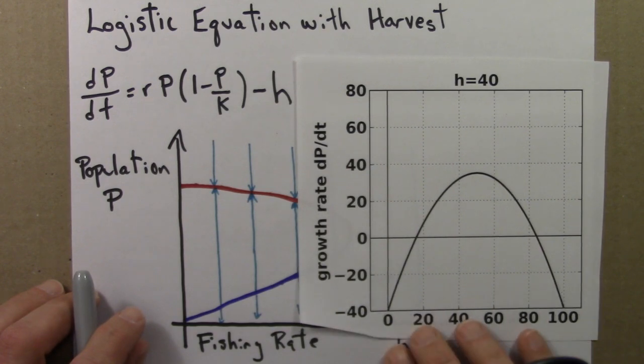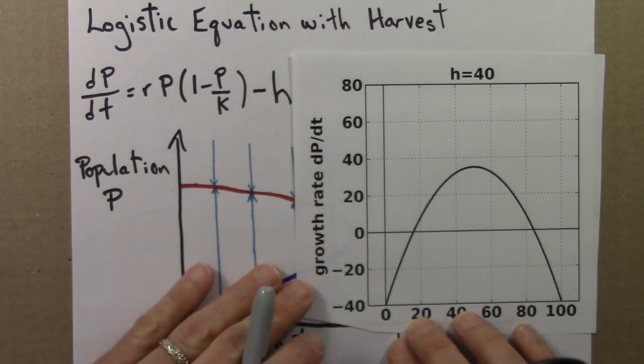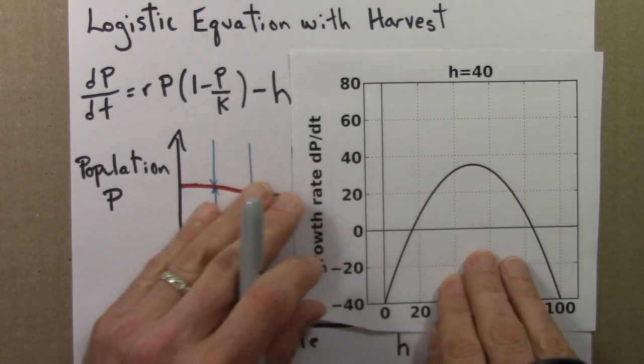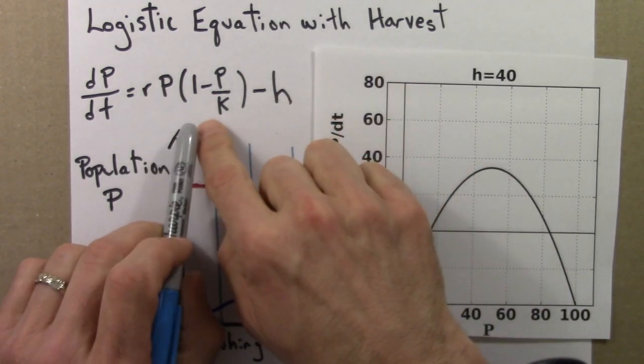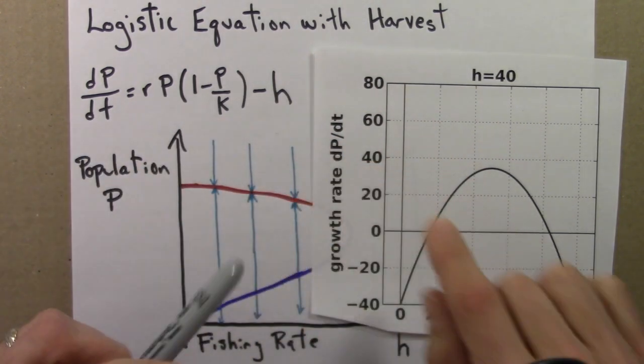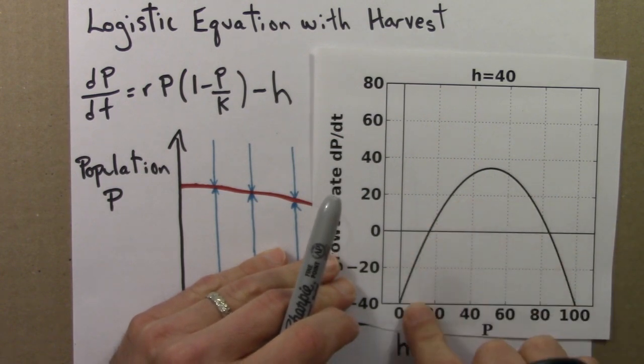So here's what that looked like, say, for h equals 40. And as h gets larger, this graph just slides down like this. But this is a smooth function of P, a smooth function of h, it's differentiable, very nice and well behaved.